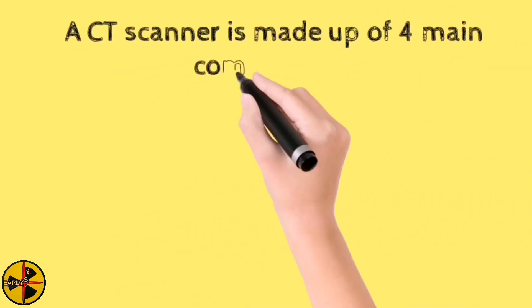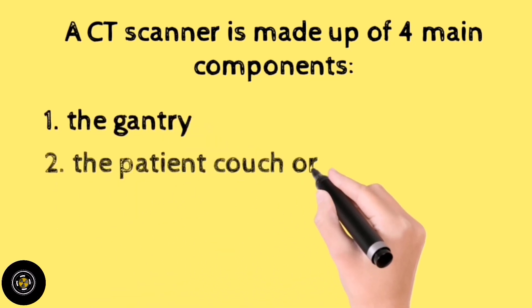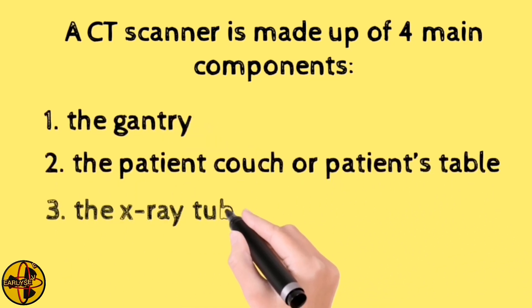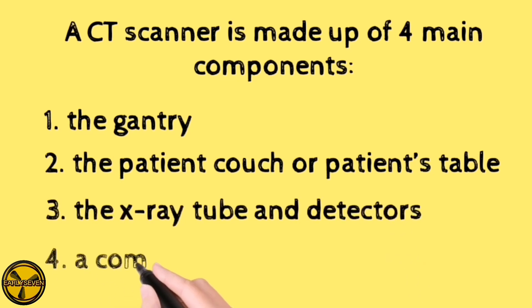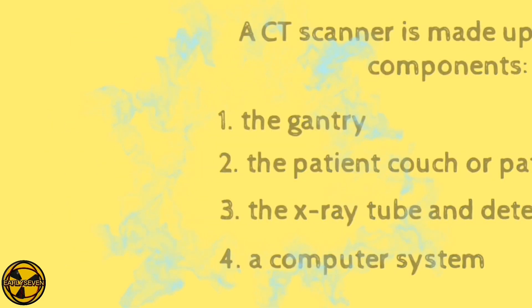A CT scanner is made up of four main components: the gantry, the patient couch or patient's table, the x-ray source or the x-ray tube and detectors. In a computer system that gathers information from the detectors and produces an image from the information.